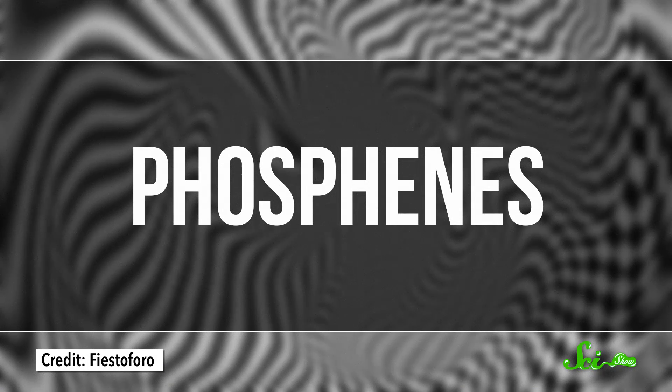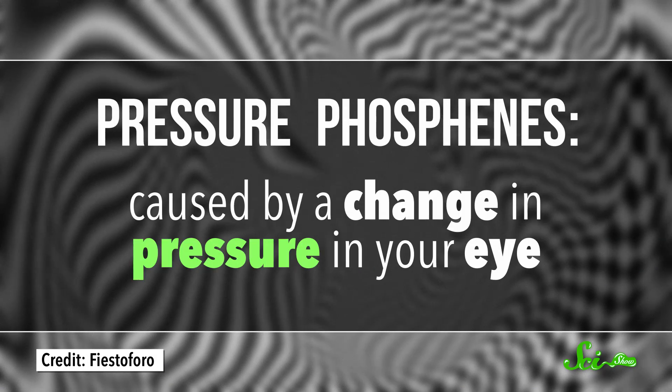Your brain interprets those signals as little flashes of light, called phosphenes. Specifically, they are pressure phosphenes, because they are caused by a change in pressure in your eye.